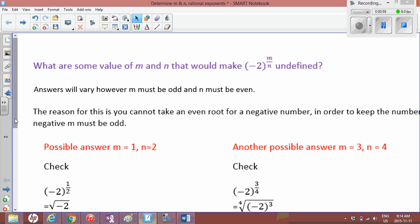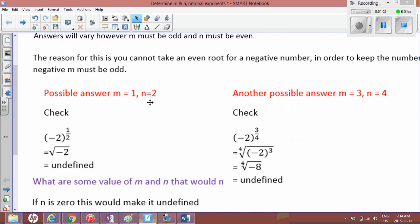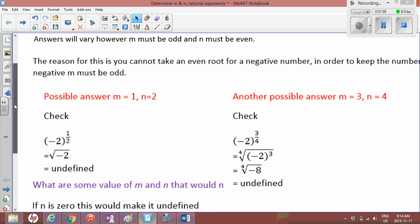So some possible answers are m equals 1 and n equals 2. You'll notice that 1 is odd and 2 is even. So the denominator of the exponent is even, the numerator is odd, which keeps this to negative 2. Negative 2 to the power of 1 is negative 2. And if you try to take the square root, which is again an even number, it's undefined.